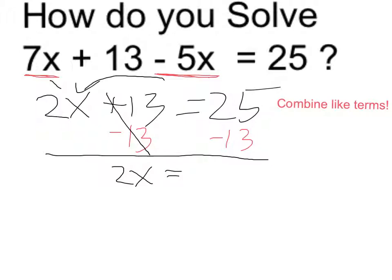And 25 minus 13 is equal to 12 on the right. So now finally I can undo the multiplication by 2 by dividing by 2 on each side, and that leaves me with x equals 12 divided by 2, which is 6.